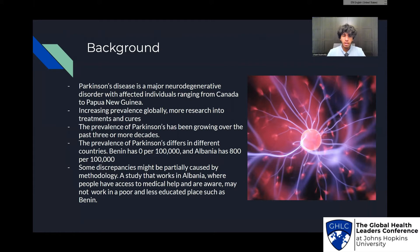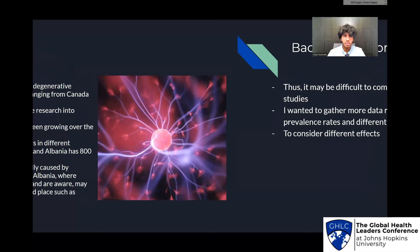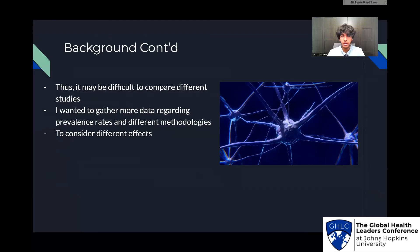This is a real global health issue. The prevalence of Parkinson's differs in different countries, and some discrepancies may be partially caused not by any actual difference, but by differences in the methodology of studies. A study that works in Albania, where people have access to medical help and are aware, may not work in a poorer and less educated place, such as Benin. Thus, it may be difficult to compare different studies' data, and I wanted to gather more data regarding prevalence rates and different methodologies to consider different effects.